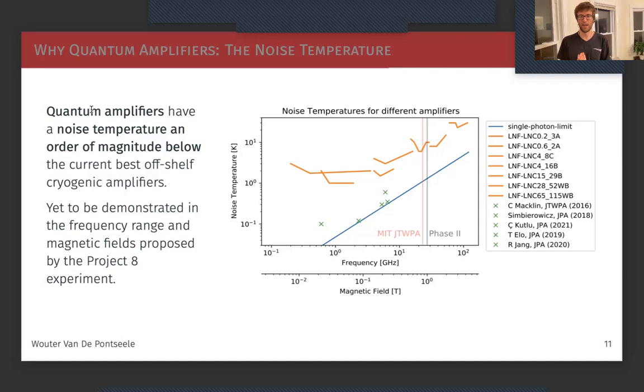You also see two vertical lines on this plot, and this is where phase two of Project 8 was located and where MIT is currently trying to develop a quantum amplifier which has not been demonstrated before at those frequencies.